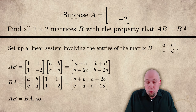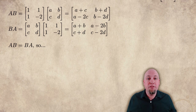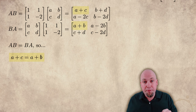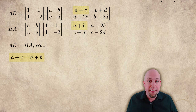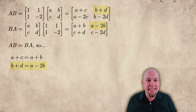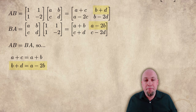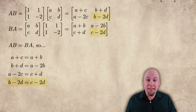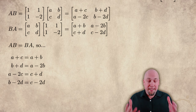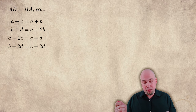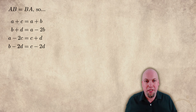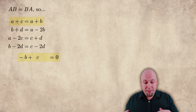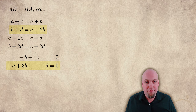We want A times B to equal B times A, so we set these two matrices equal to each other. All four of their entries have to be the same. For example, the top left entries must match: a plus c equals a plus b. The top right entries must also be equal: b plus d equals a minus 2b. And similarly for the other entries. This gives us four equations in four variables — a, b, c, and d. It's a linear system: nothing more complicated than variable times scalar plus variable times scalar. We can solve it by moving everything to the left-hand side, throwing it into a matrix, doing row operations, and interpreting the row echelon form.